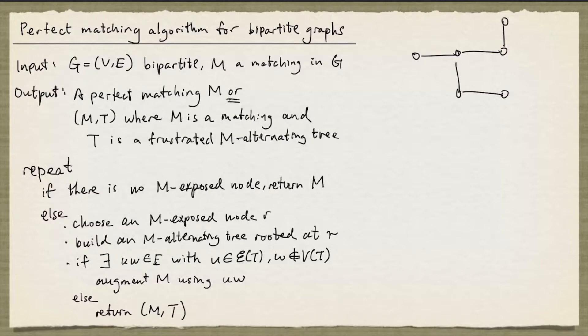T must be a frustrated M-alternating tree. The reason is that in the previous video we saw that if you have an edge with one end in the even set and the other not in the tree, for a bipartite graph that end must be in the odd set, and so by definition T must be frustrated.